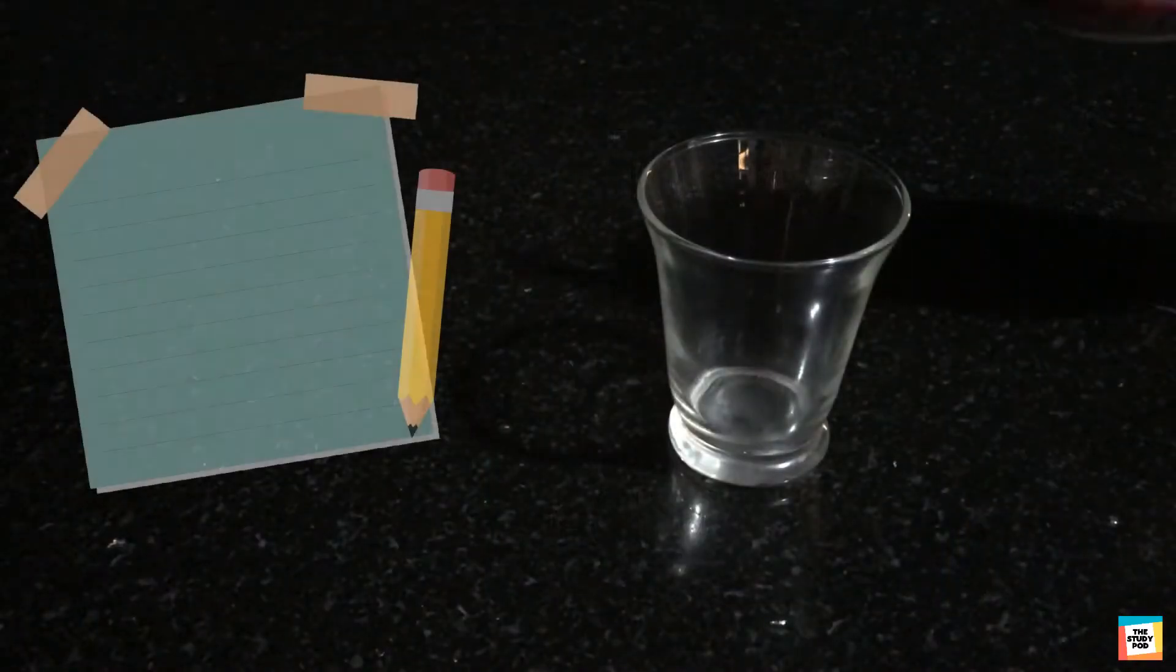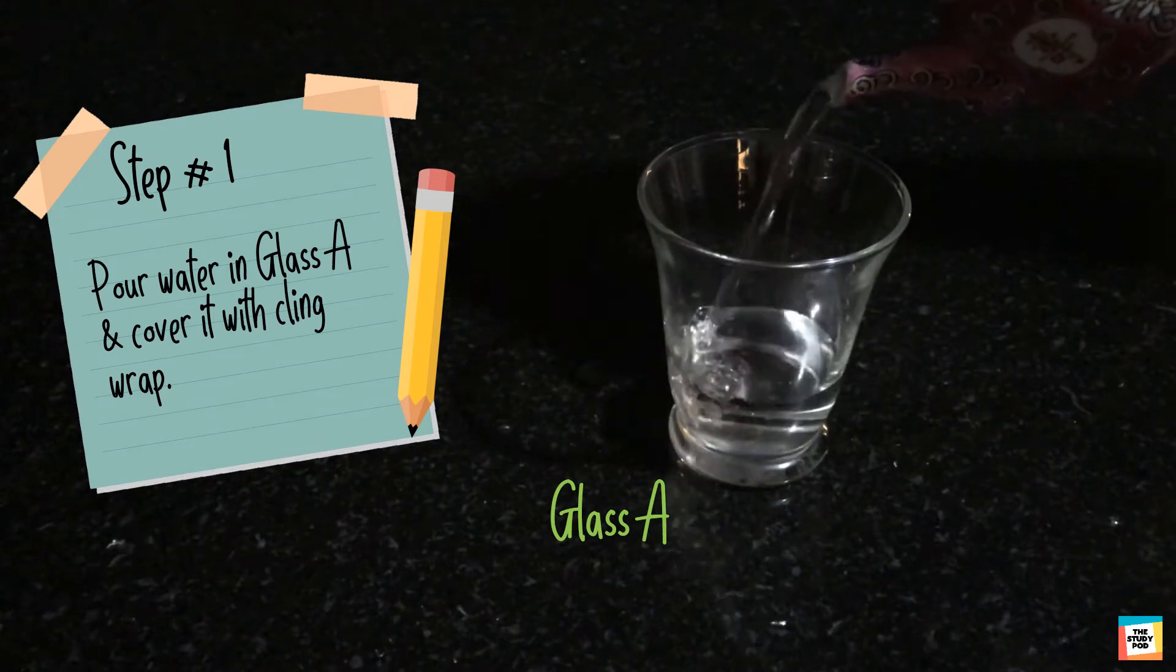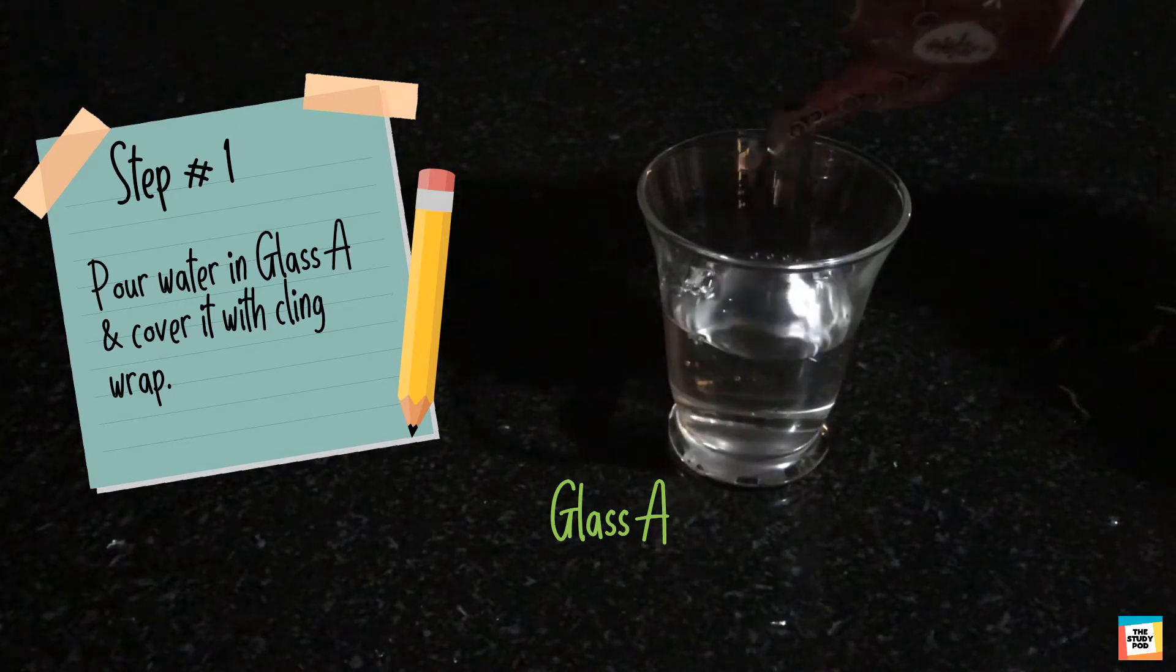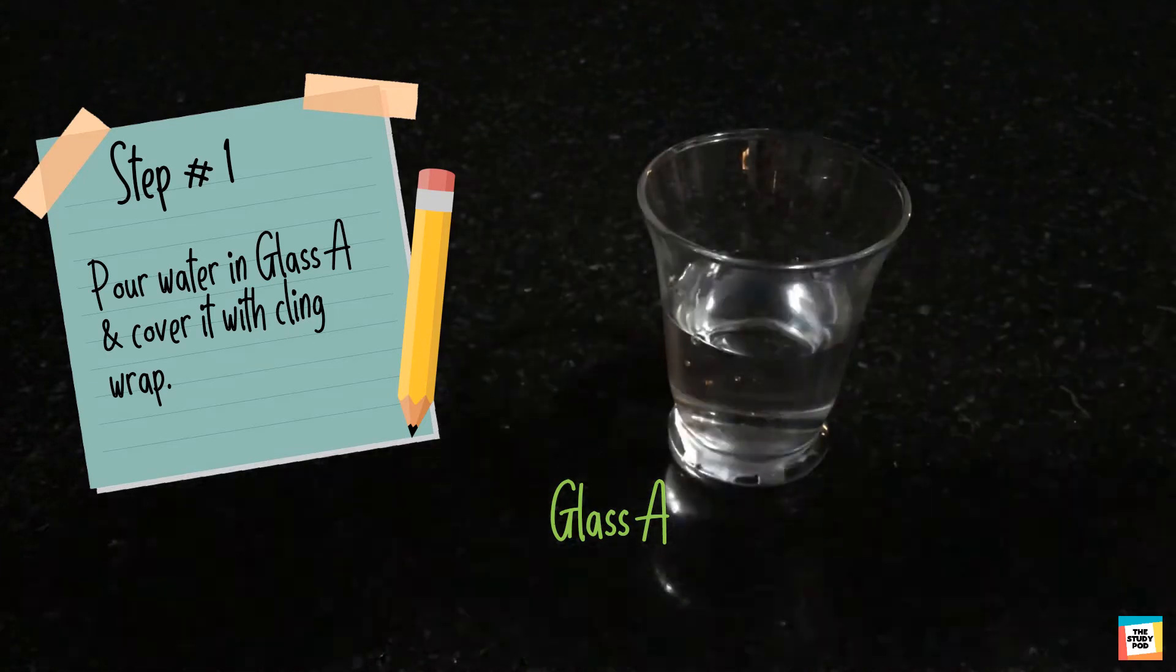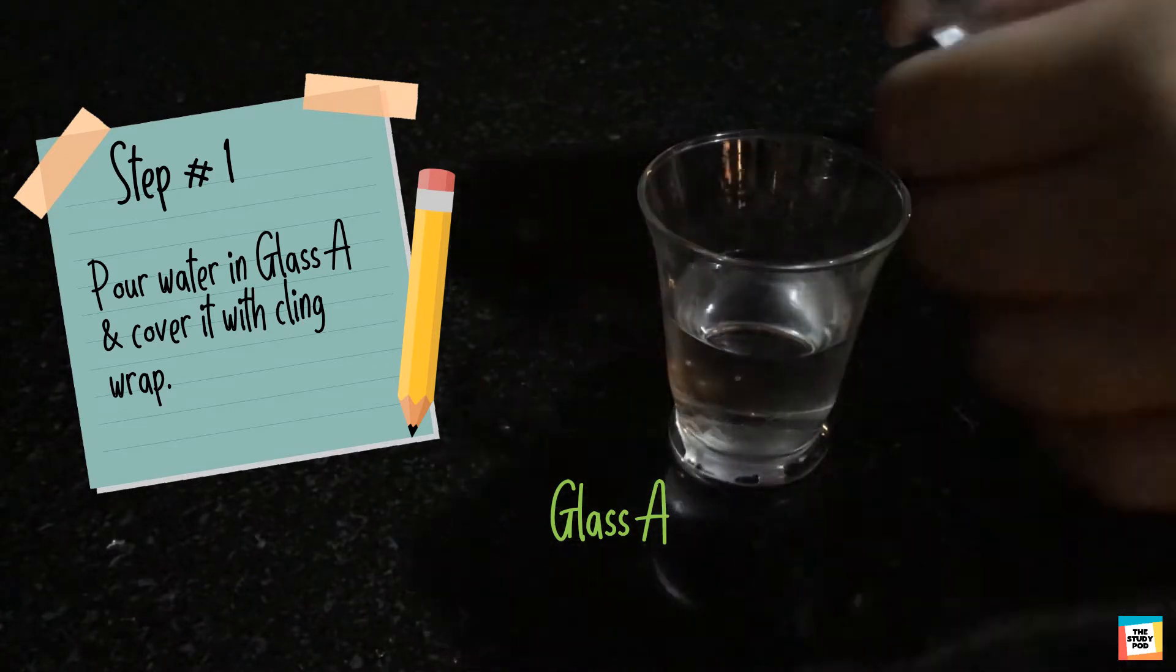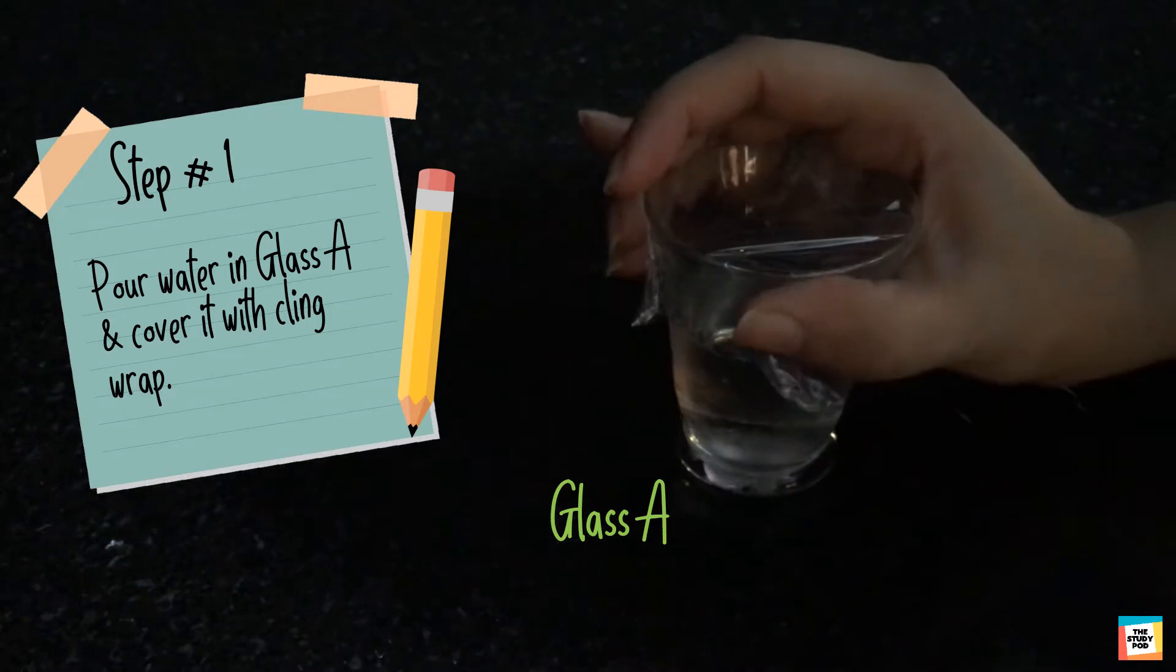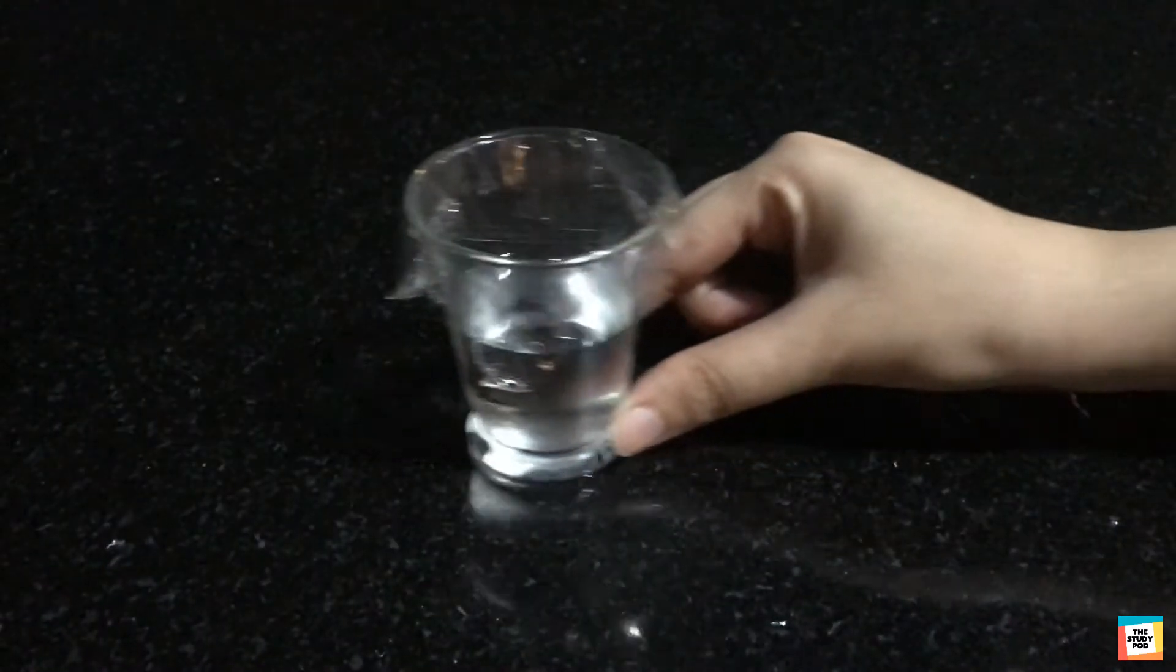Step 1. Pour water in glass A. Then cover it tightly with cling wrap. Now set it aside.